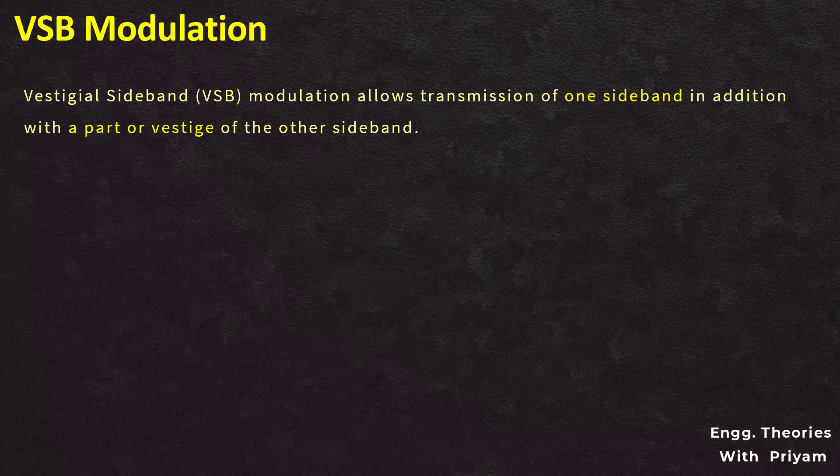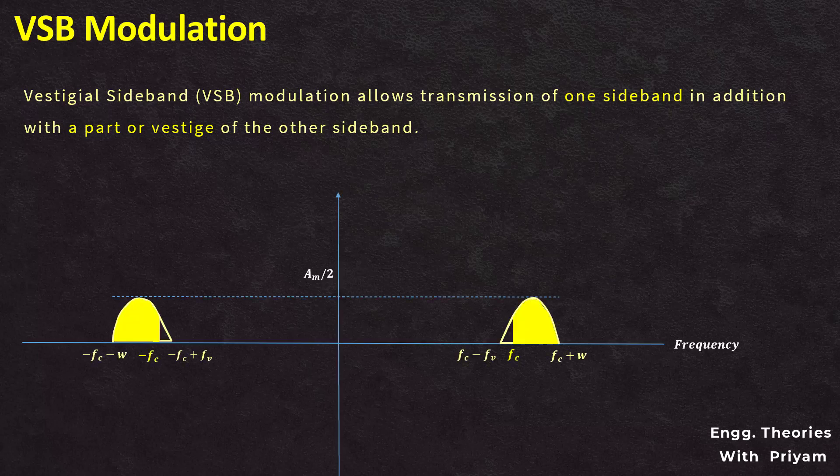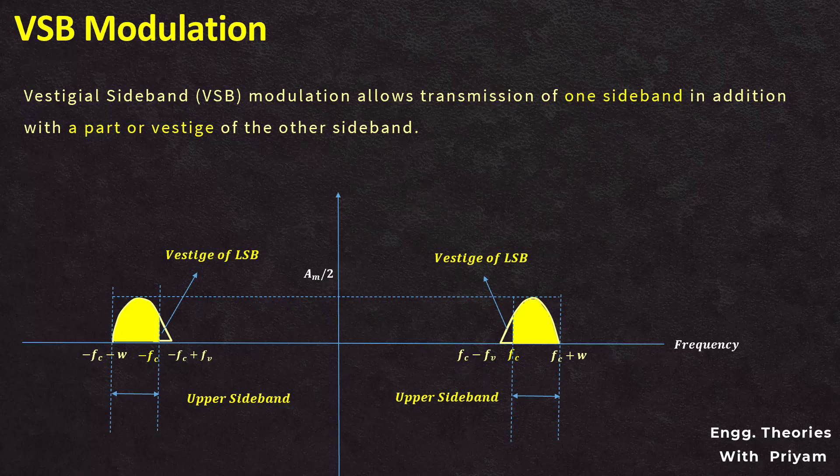In the previous lecture, we saw the generation of the VSB modulated signal, which transmits the sideband along with the vestige of the other sideband. VSB modulation is a modulation technique primarily used in broadcasting and communication systems. It is a compromise between the band efficiency of SSB and the ease of implementation of amplitude modulation. The VSB modulated signal is generated by passing it through the VSB sideband filter, which passes the main sideband along with the vestige of the other sideband.